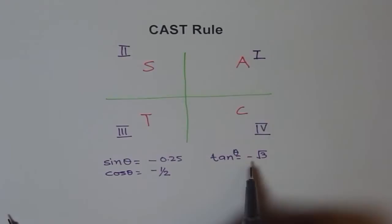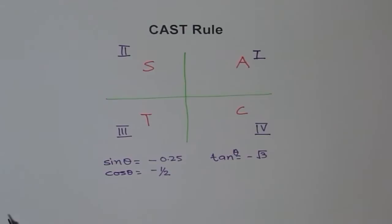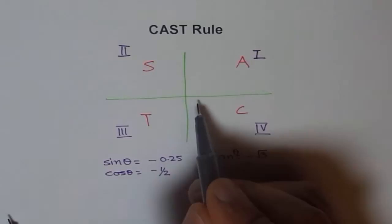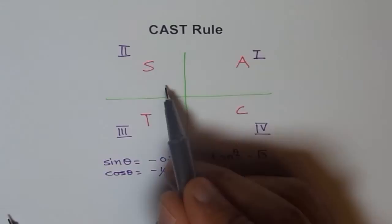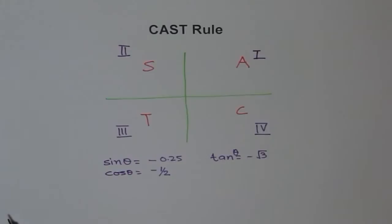The CAST rule helps you find the quadrants in which the angle should lie, given the sign of the trigonometric function. You will also observe that if sine is positive for some value, then within 0 to 360 degrees you should expect at least two answers, since sine can be positive in two quadrants. So you should look for two answers — that is kind of a must.